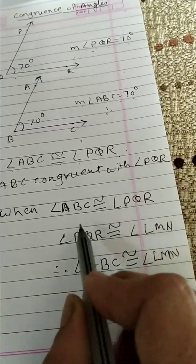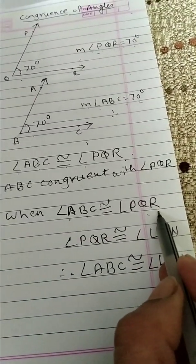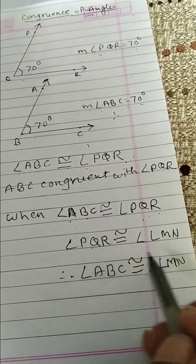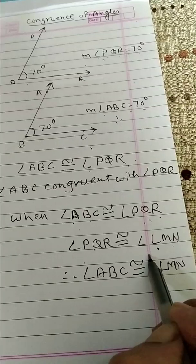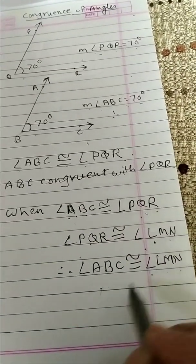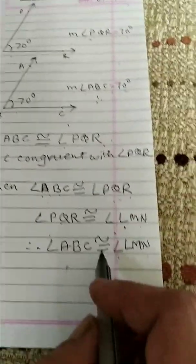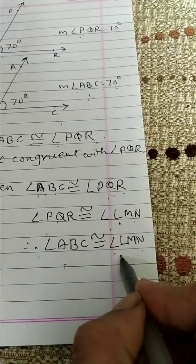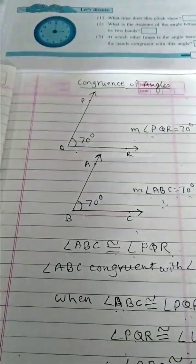What does this mean? If angle ABC is congruent with PQR, that means these two have equal measures. If angle PQR and angle LMN are also equal, then angle ABC is also what with angle LMN? Congruent. That means we can say that angle ABC congruent with angle LMN.